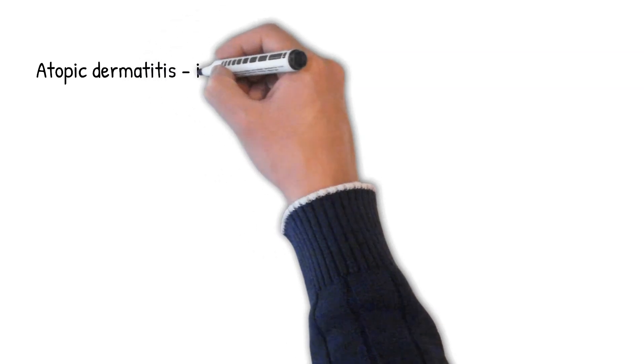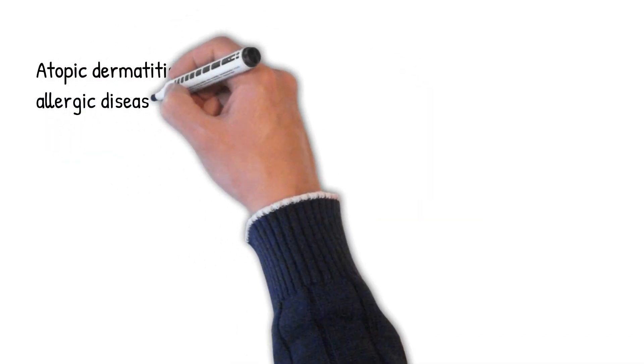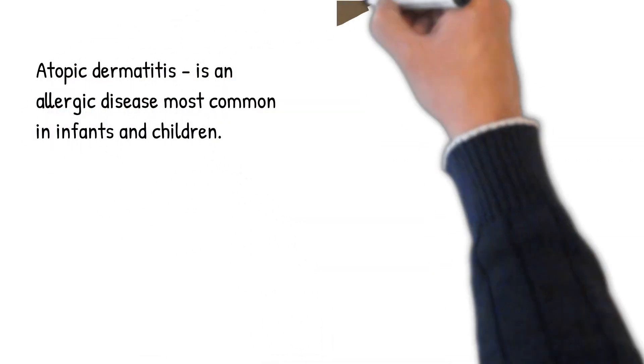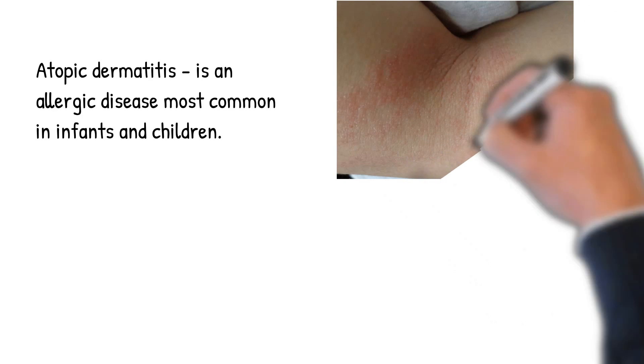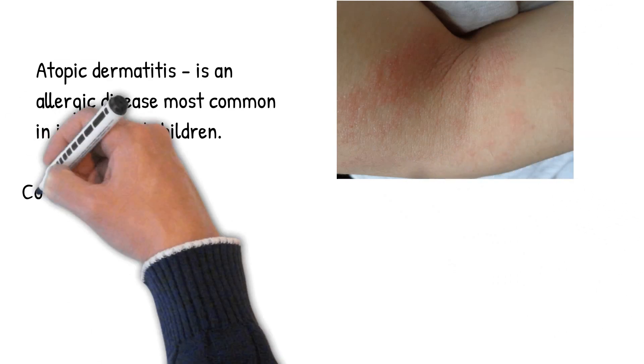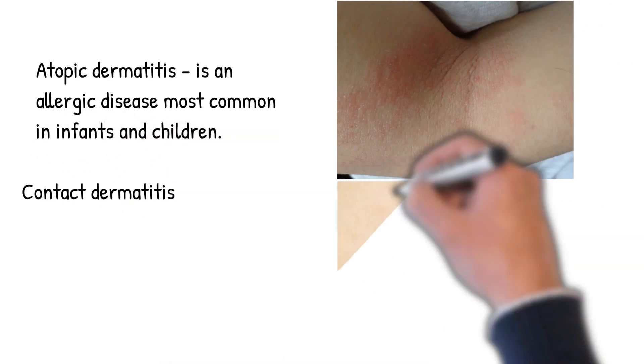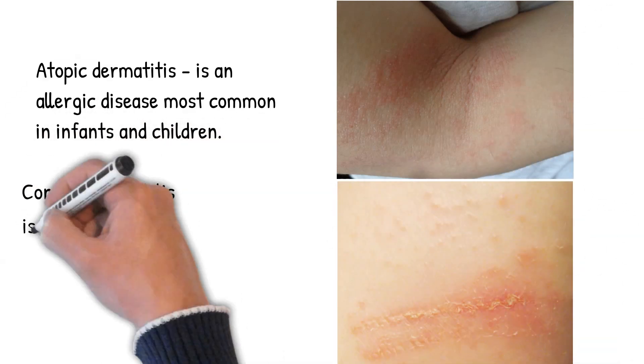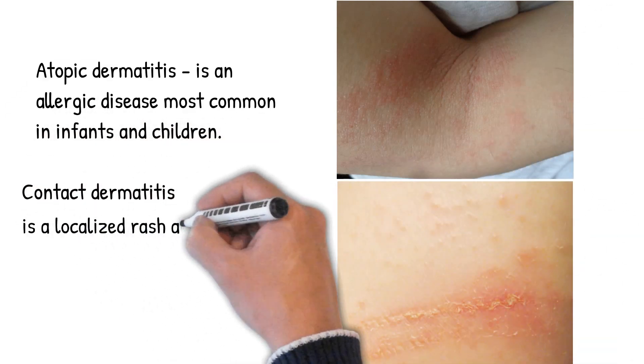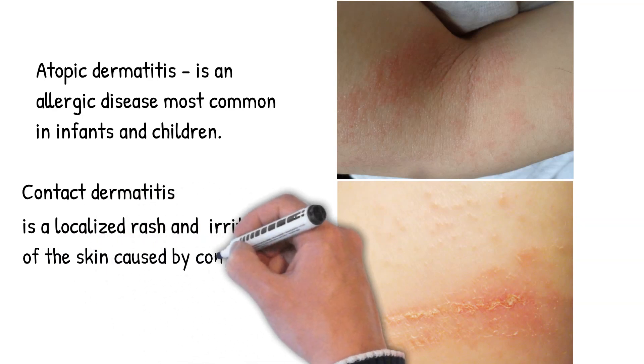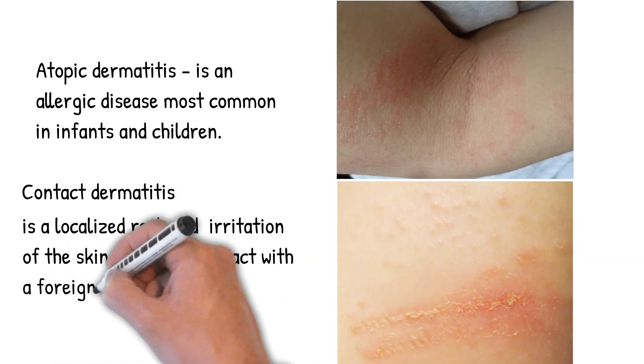Many types of dermatitis exist. Atopic dermatitis is an allergic disease most common in infants and children. Contact dermatitis is a localized rash and irritation of the skin caused by contact with a foreign substance.